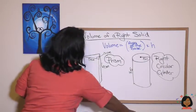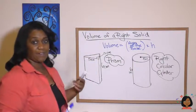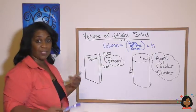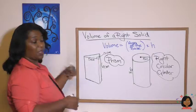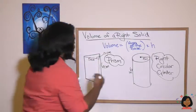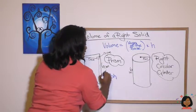So let's take a look. We know that the area of the base, the base of this triangular prism is a triangle. So the area of a triangle is one half base times height.